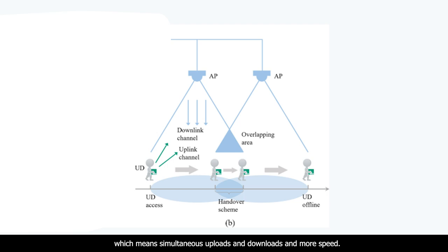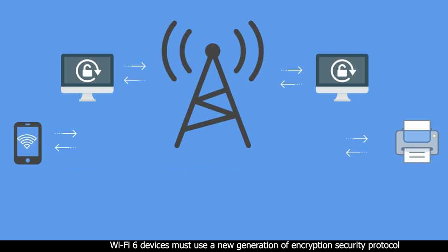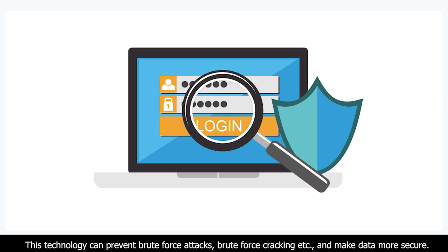With the rapidly expanding Internet of Things, Wi-Fi 6 will be critical in maintaining fast, secure connectivity. Wi-Fi 6 devices must use a new generation encryption security protocol — WPA3 — in order to pass the Wi-Fi Alliance certification. This technology can prevent brute force attacks and make data more secure.